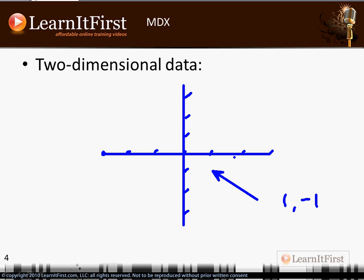Anytime you want a point, you need two coordinates. If I want this point right here, I need to say that's zero, one, two, three, zero, one, two. So that's three comma two. Two-dimension.